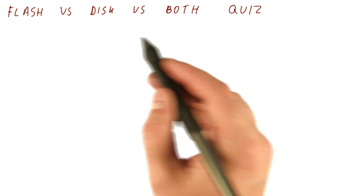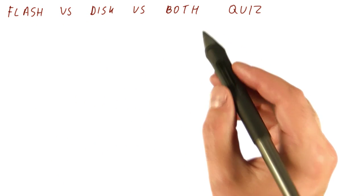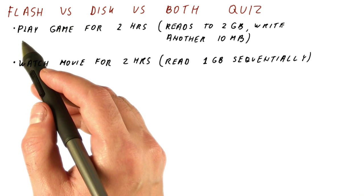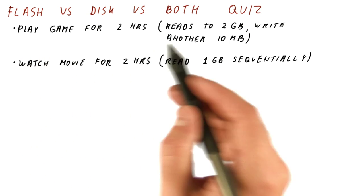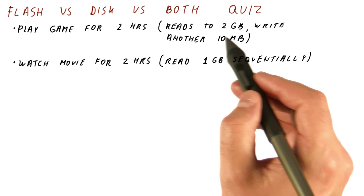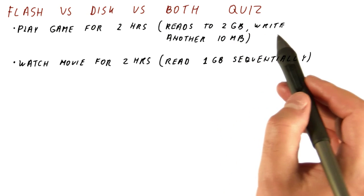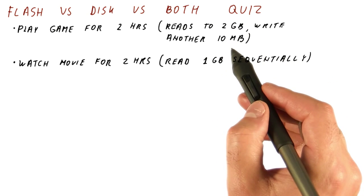So let's see if we can compare the flash, disk, and the combination of the two. Let's say that we have a user who will play a game for two hours. And the game issues reads to two gigabytes of data and writes to another ten megabytes of data.